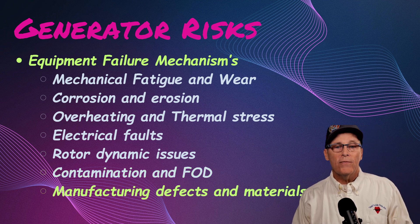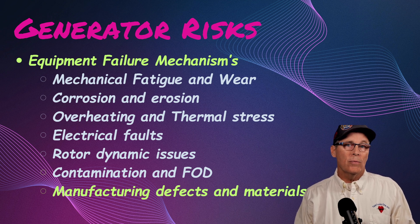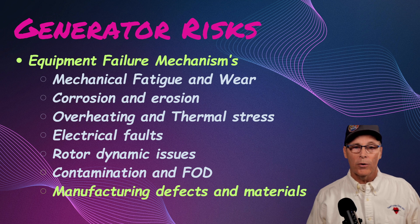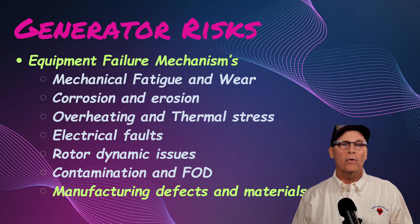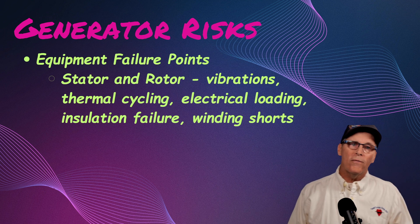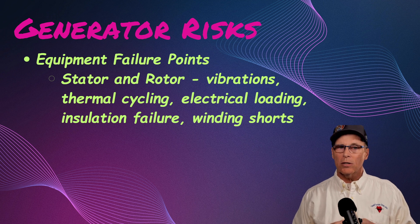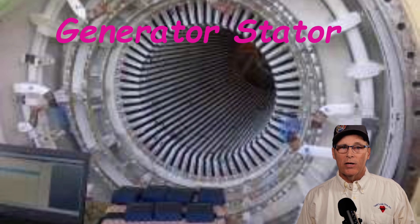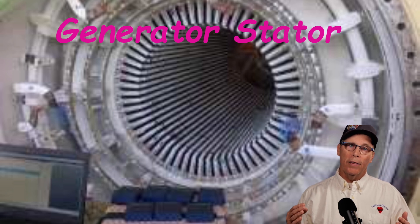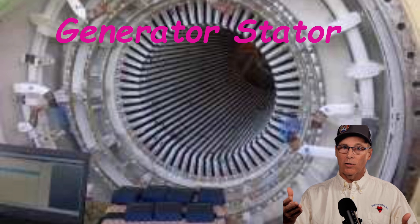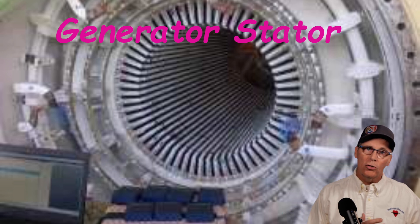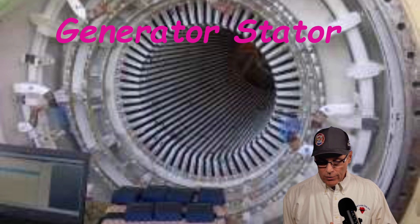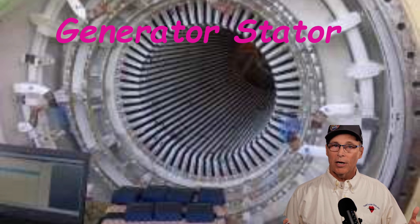Overheating occurs when you're not cooling the material properly. Manufacturing defects in the materials are another concern — these machines are assembled in a factory, shipped across the world, and installed. Defects and material problems are typically discovered early in the life of the machine. Failures occur in the stator and rotor — vibrations, electrical loading, insulation failure, and winding shorts. Stators can be hydrogen-cooled or air-cooled. Hydrogen-cooled units have hollow bars with hydrogen flowing through them, introducing a fire hazard. Hydrogen seal oil keeps the hydrogen contained — if the seal oil system is not working, hydrogen can leak out.